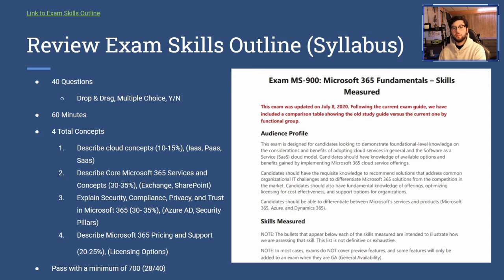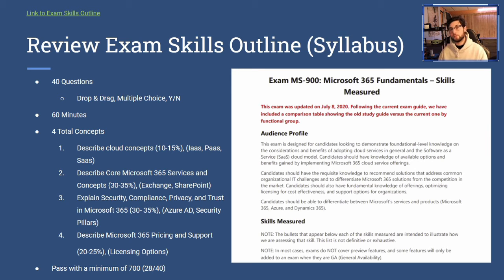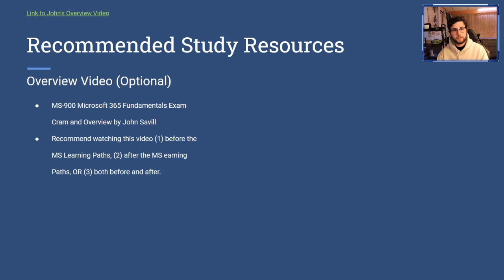You pass with a minimum score of 700, which is 28 out of 40 questions. There may be partial credit on some questions, so there's not a lot of room for slack. Make sure you know the material, or at least know the answers to the questions — I'll show examples of mock questions later.